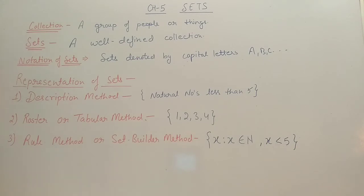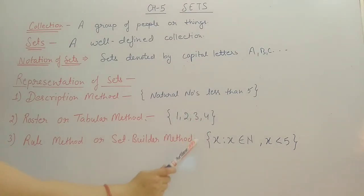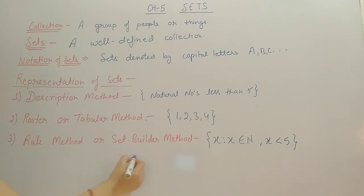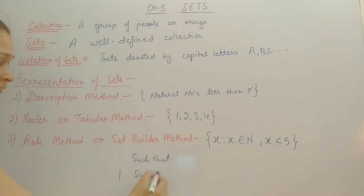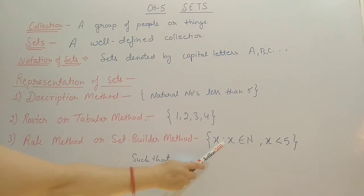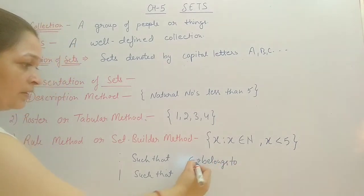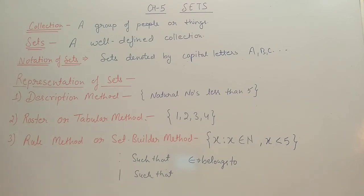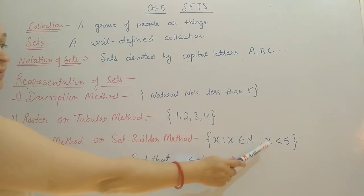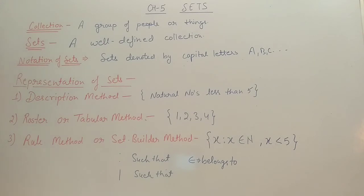The third method is the rule method or set-builder method. In this method we take a variable in place of elements and also write a property. For example: {X | X ∈ N, X < 5}. We read this as 'X such that X belongs to natural numbers and X is less than 5.' The symbol '|' or ':' means 'such that', and the symbol '∈' means 'belongs to'. Always remember to use flower brackets for the representation of sets.